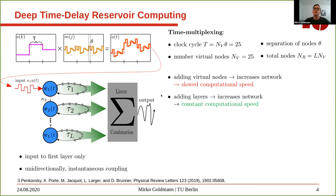To increase our network, we have two possibilities. We can add virtual nodes, which increases the network but also slows down computational time, because the clock cycle is given by the number of virtual nodes — increasing virtual nodes increases the clock cycle, which defines the rate of input feeding. For the deep system, we can also add layers to increase the network, and here we have the advantage that we maintain constant computational speed.